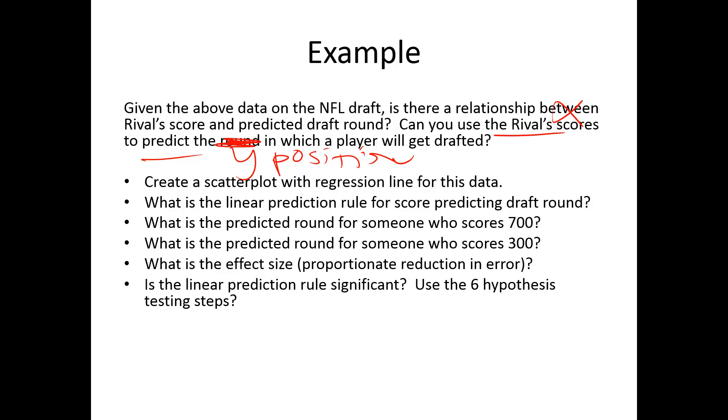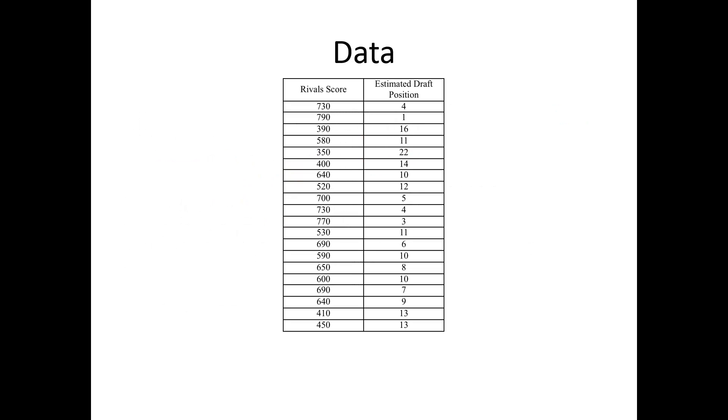We're going to create a scatter plot with a regression line, use the linear prediction rule to look at several different scores, and talk about effect size and do the six steps. So here's the data. I have their score and their estimated draft position.